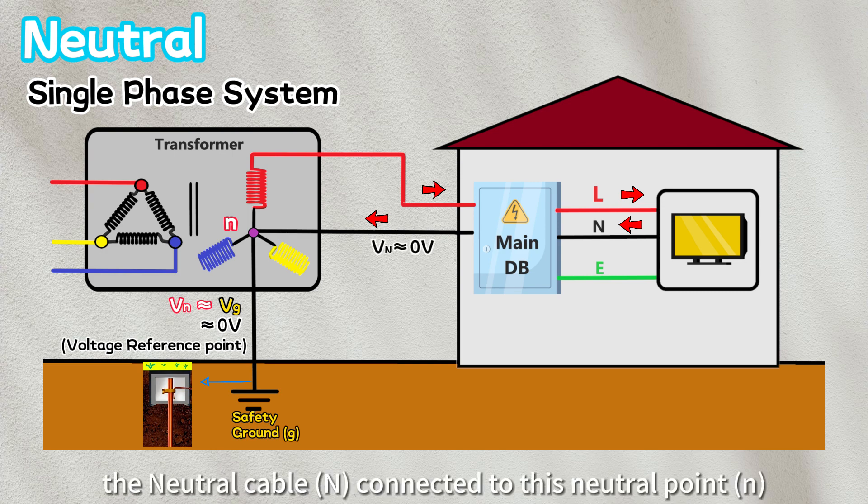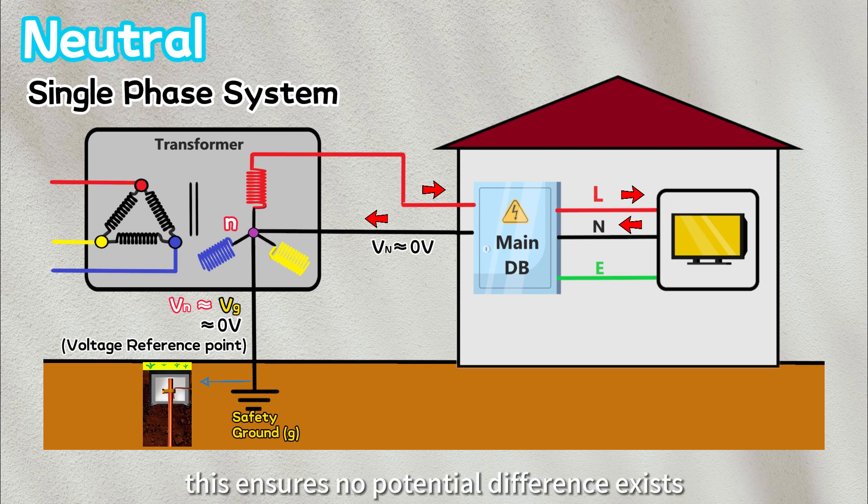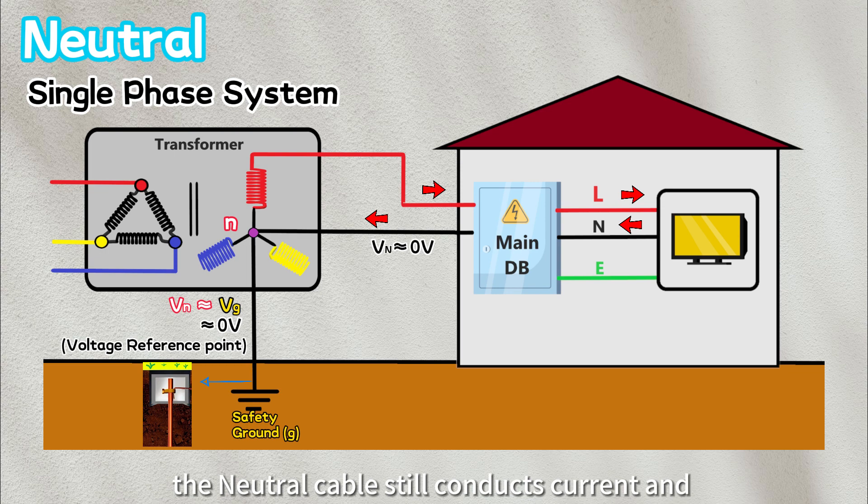In an ideal scenario, the neutral cable connected to this neutral point would have zero volt as well. This ensures no potential difference exists between the neutral cable and ground. However, in practical applications, the neutral cable still conducts current and possesses some resistance.